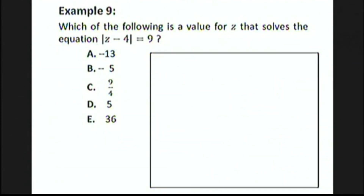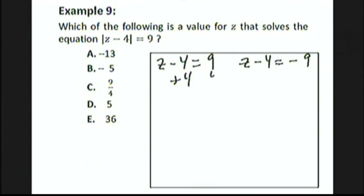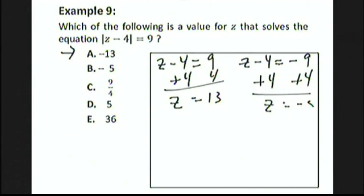Which of the following is a value for z that solves the equation absolute value of z minus 4 equals 9? This equation is equivalent to two equations: z minus 4 equals 9, giving z equals 13, and z minus 4 equals negative 9. Don't be tricked into picking negative 13 — that is not correct. Adding 4 to the second equation gives z equals negative 5, which is the correct answer, choice B.